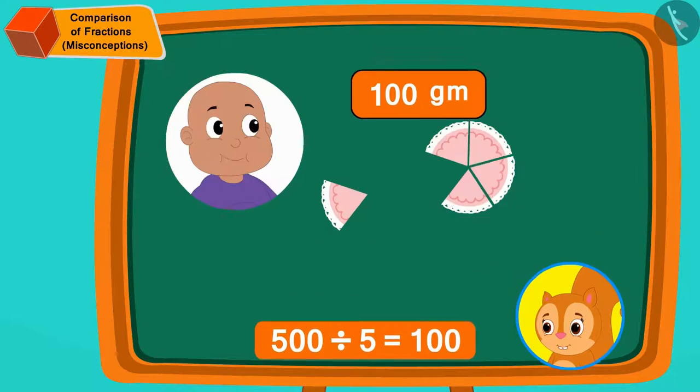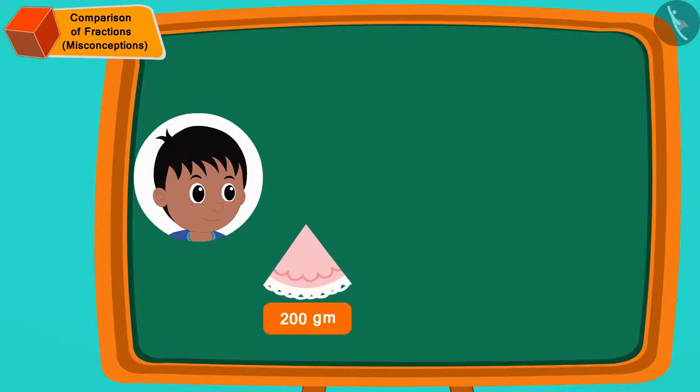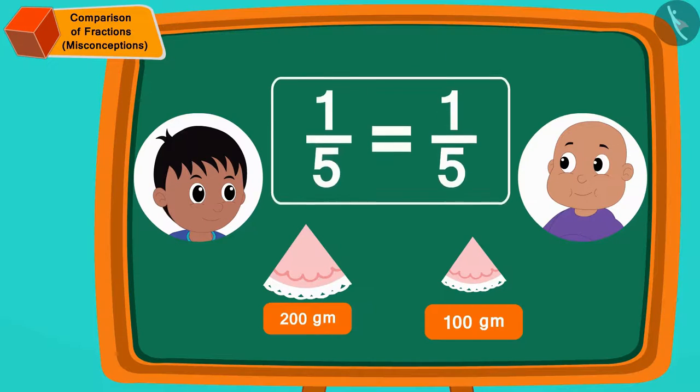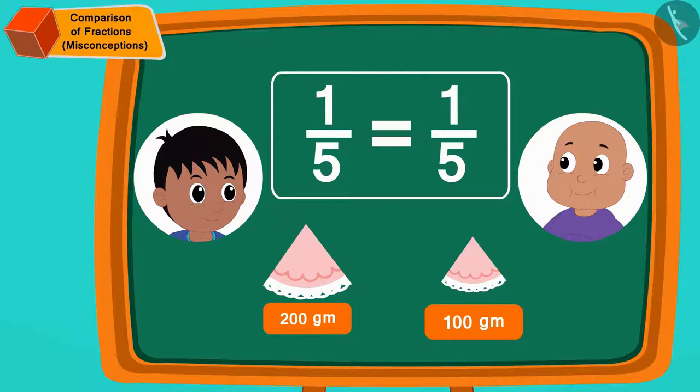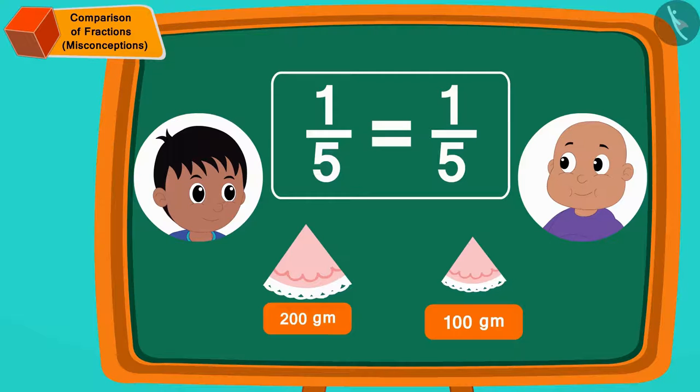Children, now can you see that Raju has got 200 grams of cake and Bablu has got 100 grams of cake. Even though the fractions of the parts of Raju and Bablu's pieces are the same, the amount of cake that Raju got is more than the amount of cake that Bablu got. Therefore, Bablu's statement is correct.